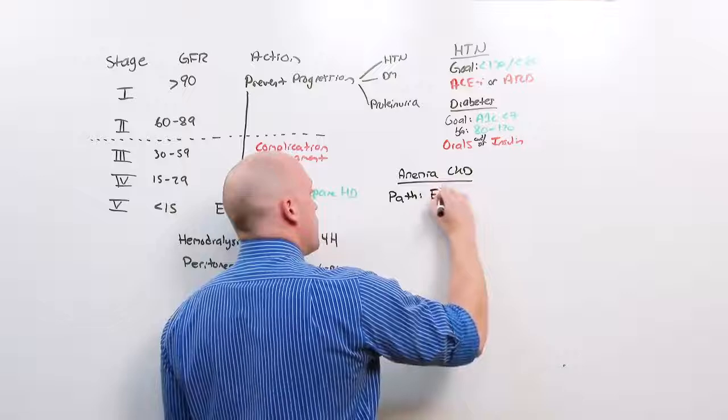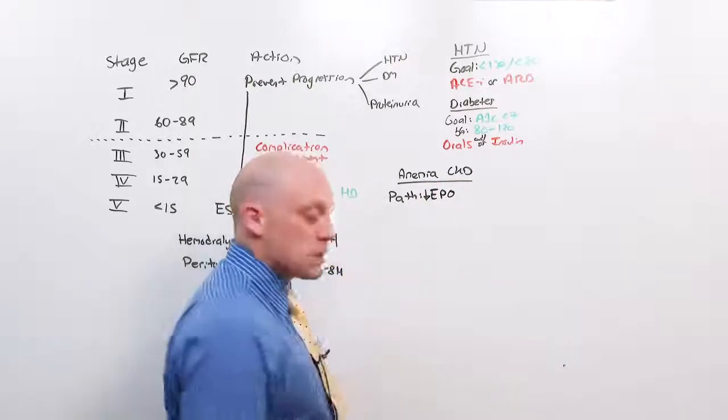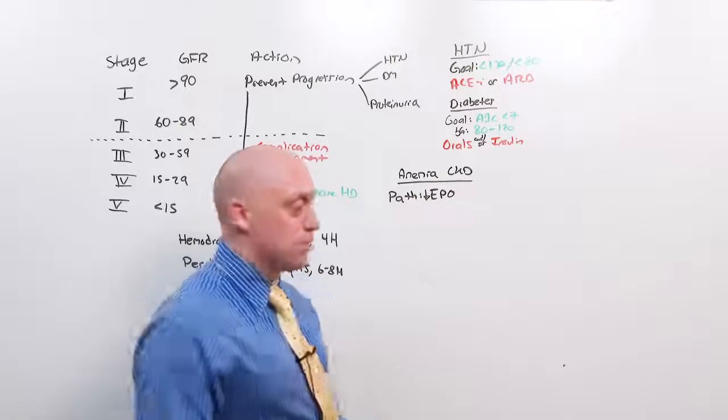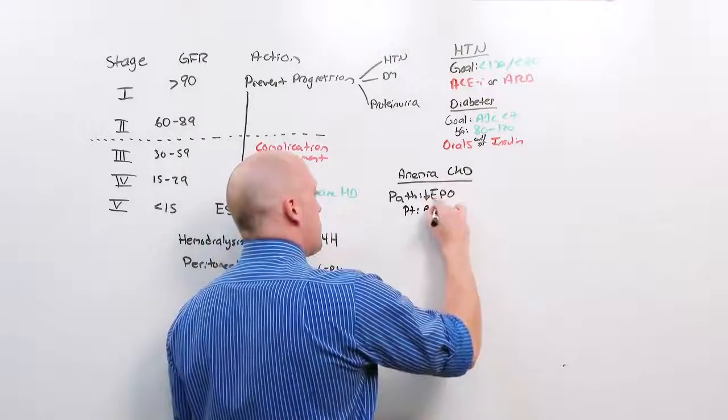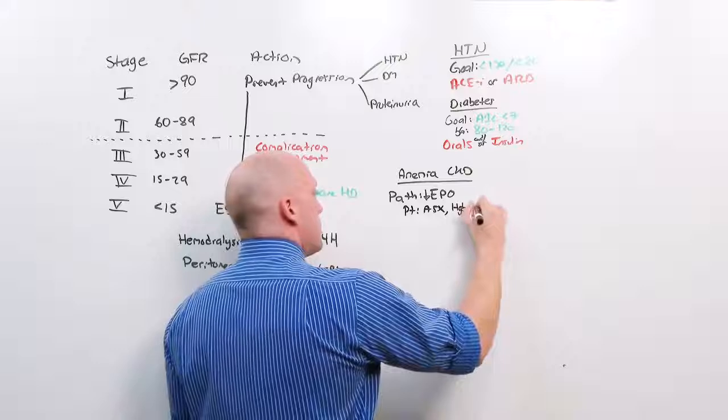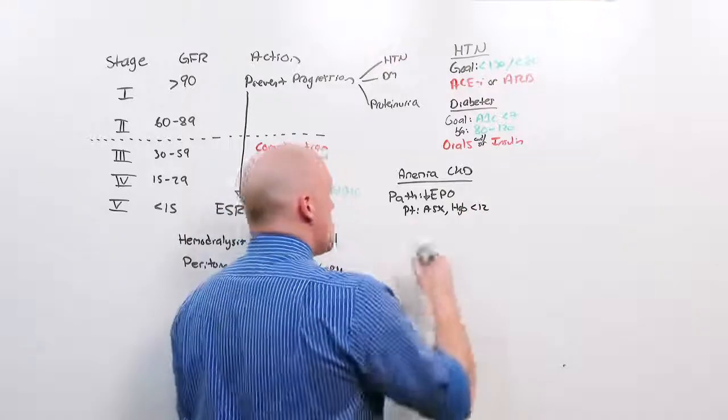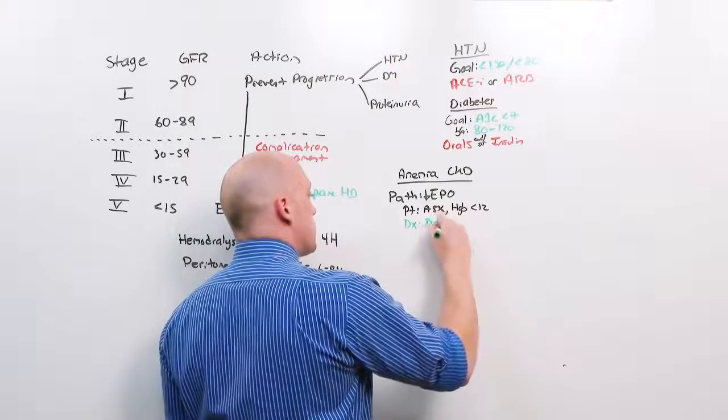Anemia of chronic kidney disease happens like this. Kidneys make EPO. As the kidneys crap out, there's very little EPO. So there's nothing to tell the bone marrow to make more red blood cells. The patient is generally going to present asymptomatic. You screen them, and their hemoglobin is less than 12 when you start investigating.